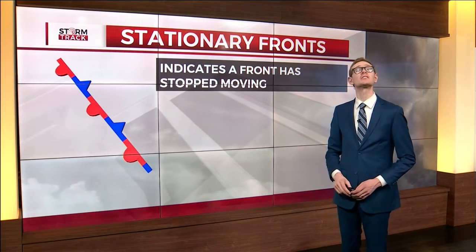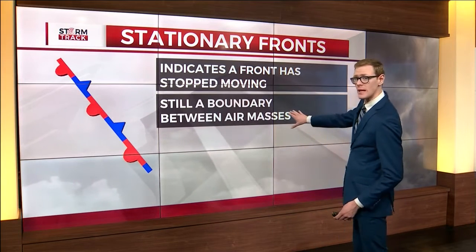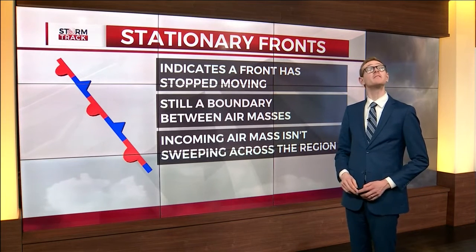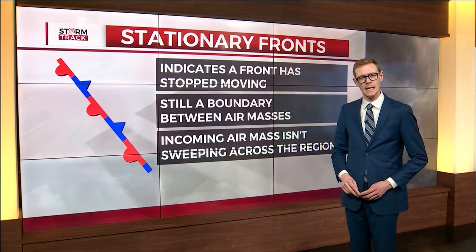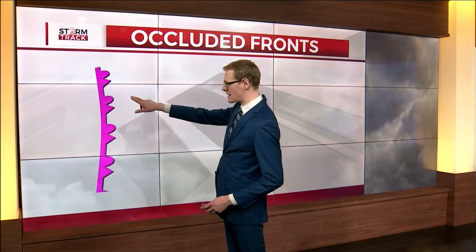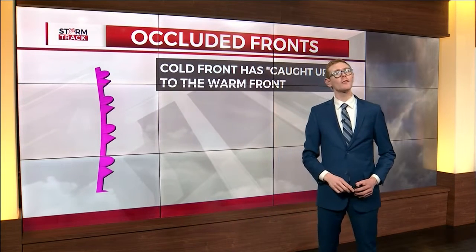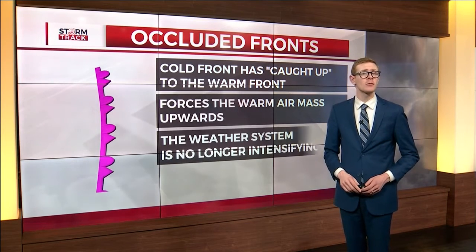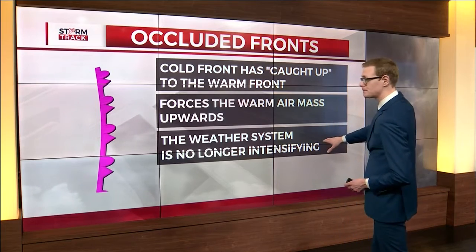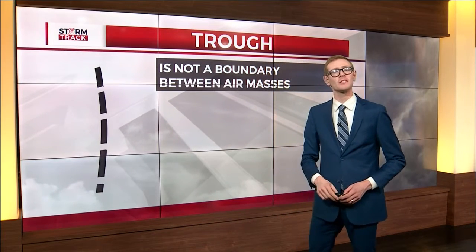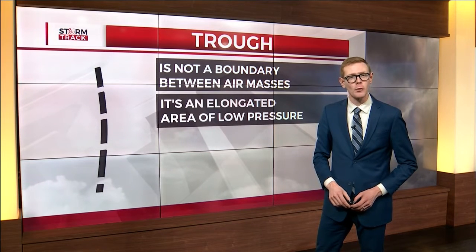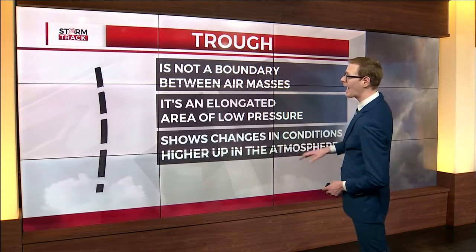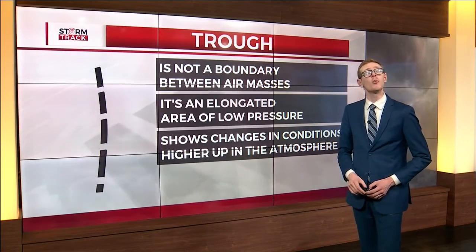A stationary front is an alternating red and blue line. This indicates a front has stopped moving. There is still a boundary between two air masses, but the incoming air mass isn't advancing across the region for the time being. An occluded front is a purple line with alternating triangles and half moons. This means that the cold front has caught up to the warm front and is forcing the warm air mass upwards. Occluded fronts mean the weather system is no longer intensifying. A trough is a dashed line, and this isn't a front because it isn't a boundary between air masses. It is an elongated area of low pressure. Troughs do show changes in conditions higher up in the atmosphere, and they still indicate where we can see precipitation occur.